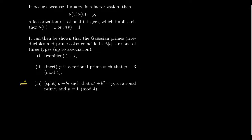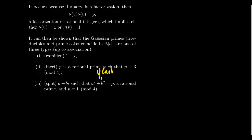The third family is the split primes: complex numbers of the form a + bi such that a² + b² = p, where p is a rational prime. Notice a² + b² is the norm of a + bi, so the norm equals a rational prime, and by the earlier argument such a number is necessarily a Gaussian prime. This happens only when p is congruent to 1 mod 4.